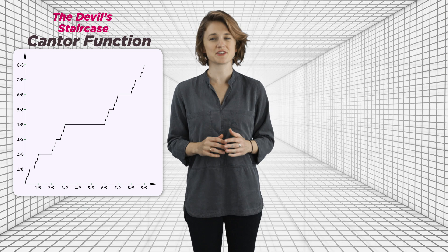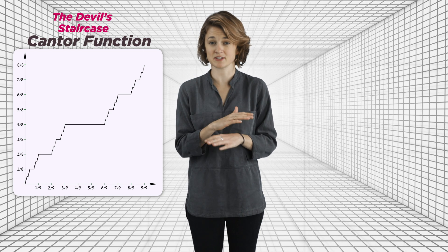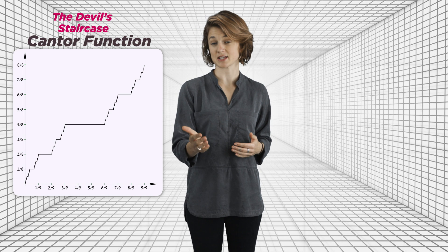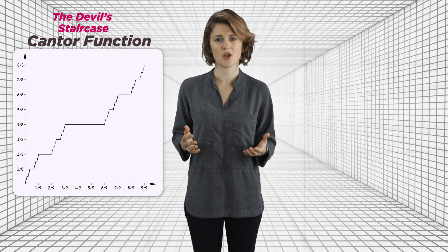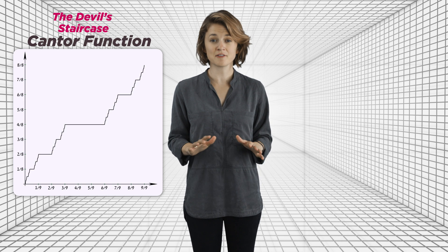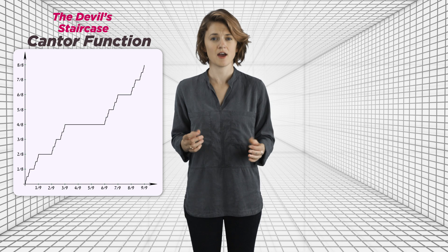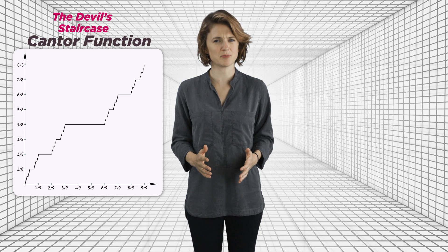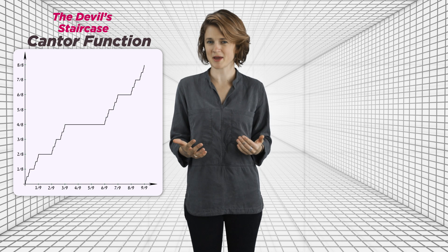So the devil's staircase moves one unit vertically despite having zero slope almost everywhere at every point besides the Cantor set and being continuous. All the interesting non-flat points of this crazy function form the Cantor set, a fractal with uncountably many points, but zero length. They're quite the unusual mathematical objects. Don't forget to answer the challenge question. See you next time.